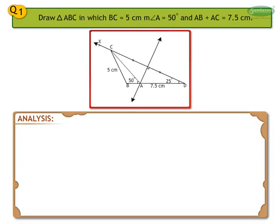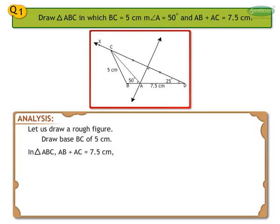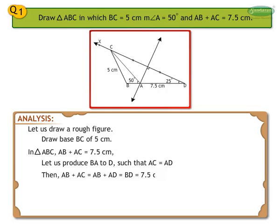Analysis. Let us draw a rough figure. Draw base BC of 5 cm. In triangle ABC, AB plus AC is equal to 7.5 cm. Let us produce BA to D such that AC is equal to AD. Then, AB plus AC is equal to AB plus AD is equal to BD, which is equal to 7.5 cm.